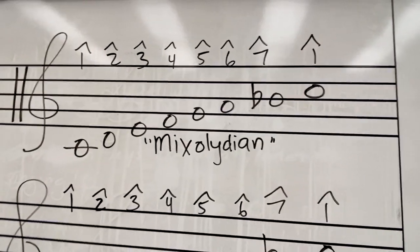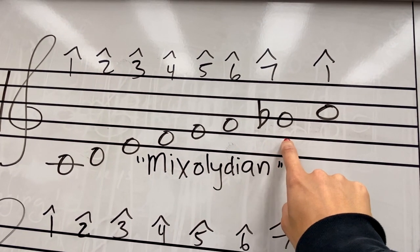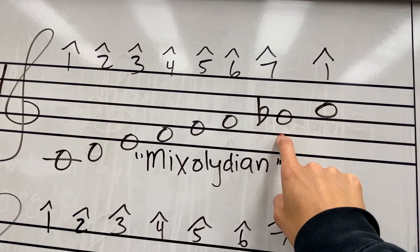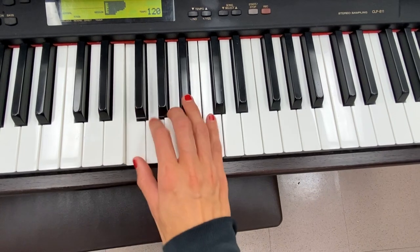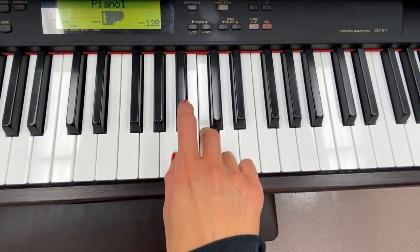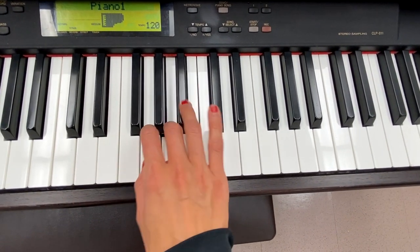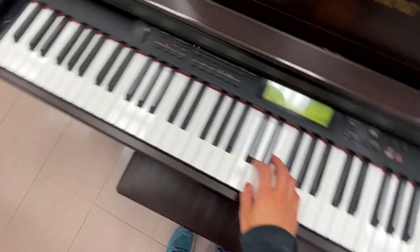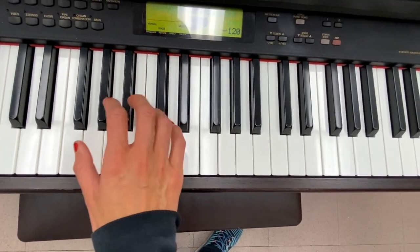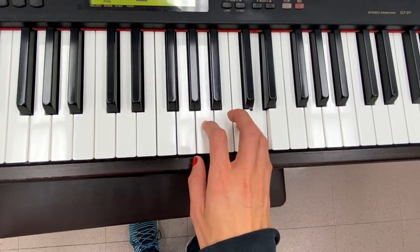The next mode is Mixolydian. This one has a flat or lowered seventh degree in its scale. For example, in G major, your seventh scale degree is an F sharp, so it just becomes an F natural. In solfege, it's Ti-Do — it's not as strong, so there's a lot of energy that makes it want to go back down rather than resolve up. In D Mixolydian, you lower that C sharp to become a C natural.